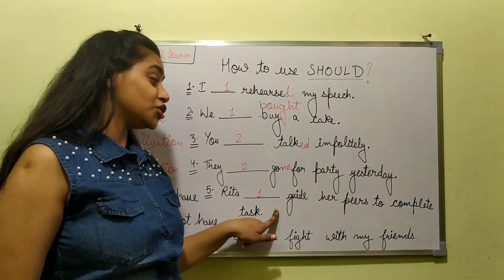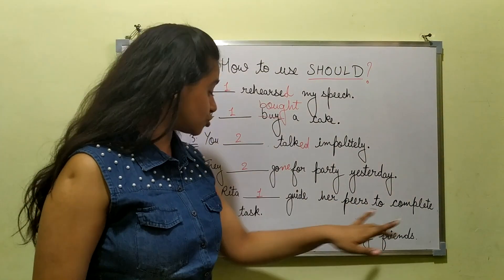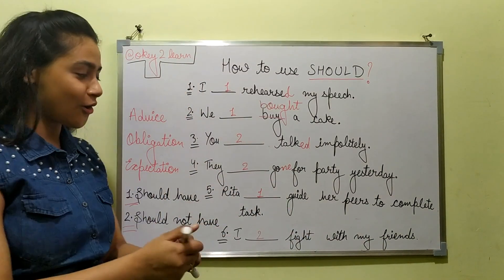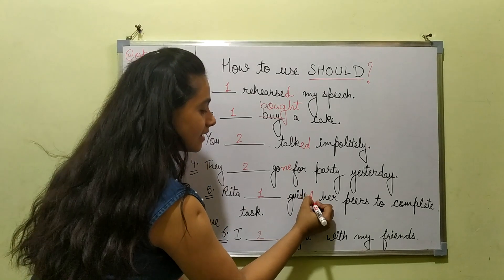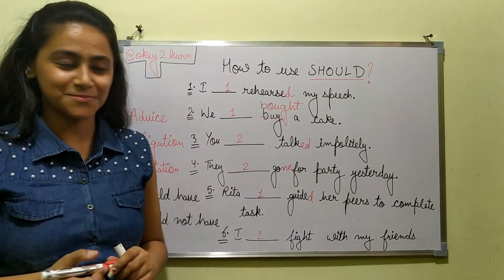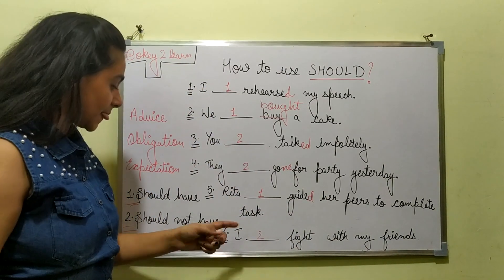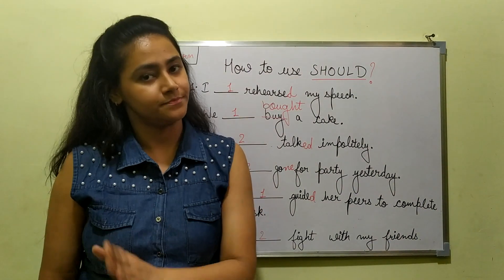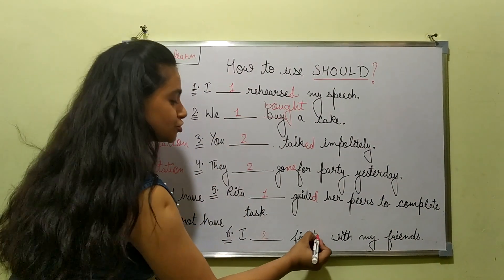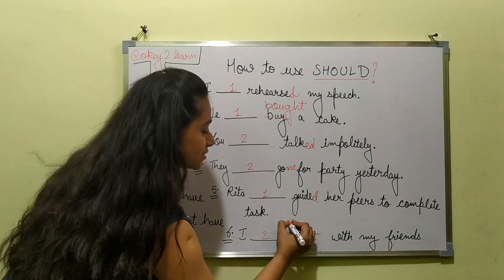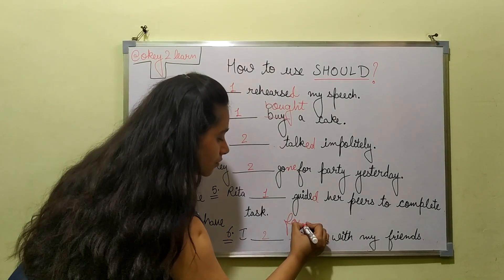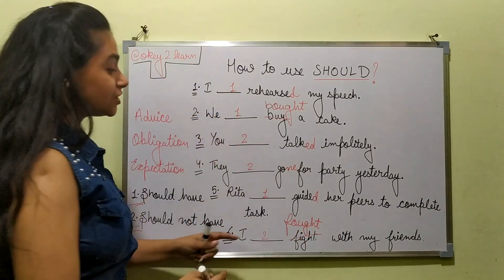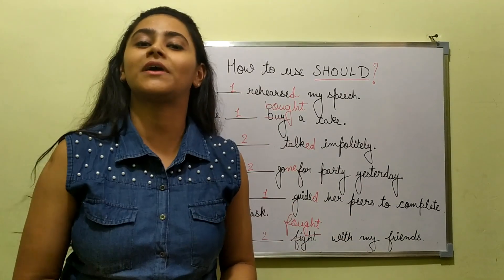Next sentence: 'Rita should have guide her peers to complete tasks.' Should it be 'guide' or 'guided'? Absolutely correct — it should be 'guided.' Then: 'I should not have fight with my friends' — incorrect. It should be 'fought.' So: 'I should not have fought with my friends.'